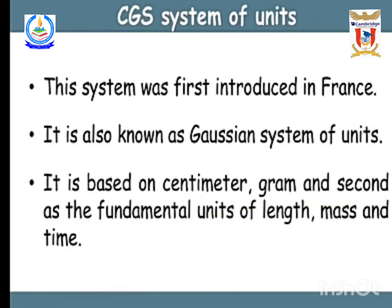The CGS system was first introduced in France and is also known as the Gaussian system of units. It is based on centimeter (C), gram (G), and second (S). These are the fundamental units of length, mass, and time respectively: centimeter for length, gram for mass, and second for time.